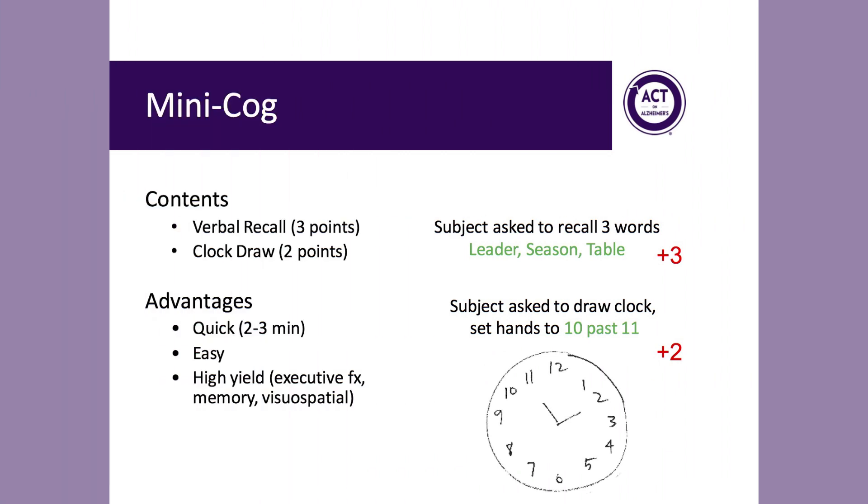The Mini-Cog tool is a simple, fast, yet highly reliable cognitive screening tool that can be incorporated easily into clinic settings. The measure includes two components: a word list recall and a clock drawing task. There are multiple advantages of the Mini-Cog. It is quick and easy to administer, and the combination of the word list with the clock draw means that multiple cognitive domains are measured, including memory, visio-spatial functioning, and executive thinking.